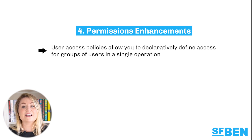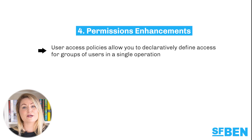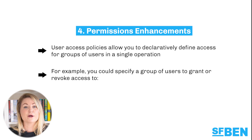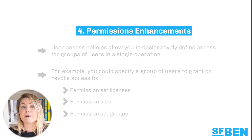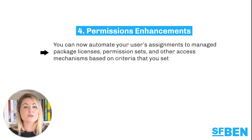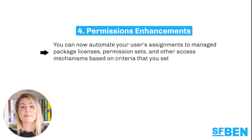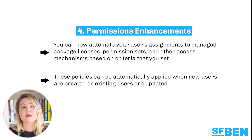User access policies allow you to declaratively define access for groups of users in a single operation. For example, you could specify a group of users to grant or revoke access to permission set licenses, permission sets, permission set groups and more. With the Summer 23 release you can now automate your users' assignments to manage package licenses, permission sets and other access mechanisms based on criteria that you define. These policies can be applied automatically when new users are created or existing users updated.